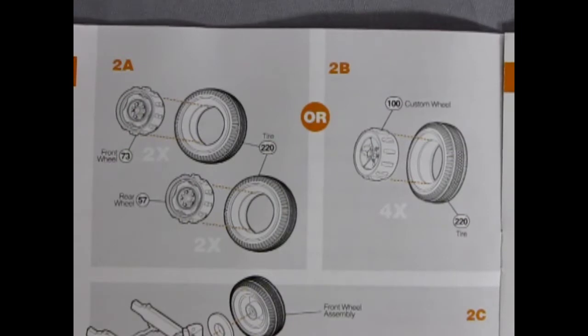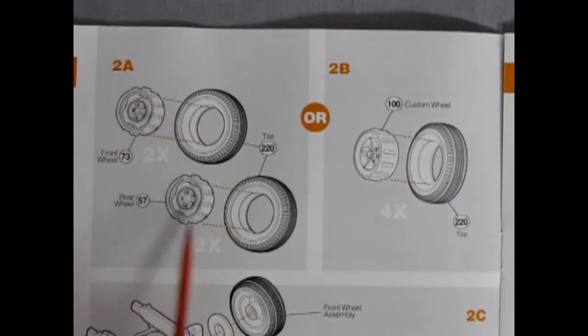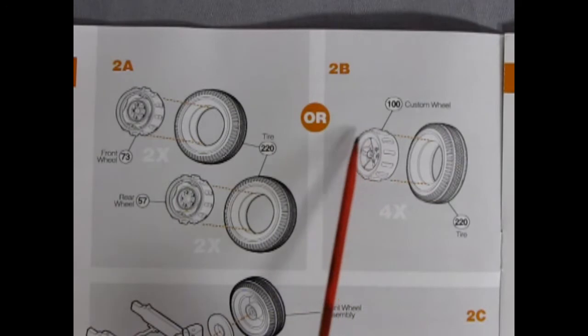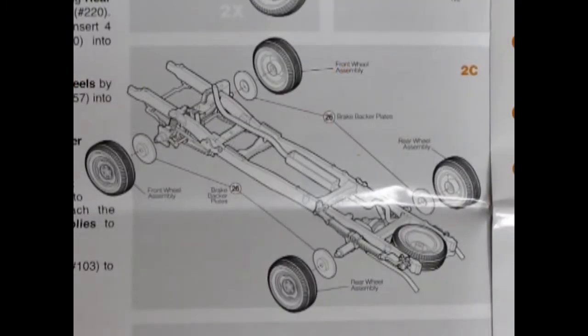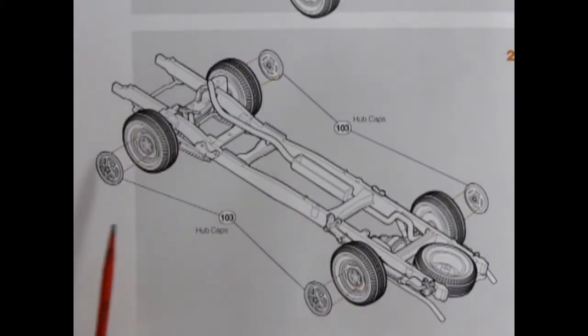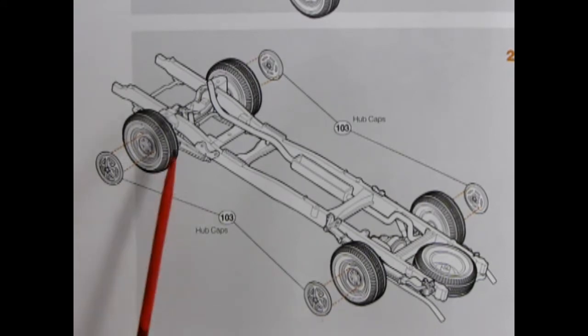In this model kit the builder has a choice between using the stock factory wheels or these five spoke Krager wheels. All of which pop onto these very nice tires. Our wheels and tires glue on via these brake backing plates which pop onto our axles. After we get our stock wheels on we have the choice of using these great 1970s style Ford hubcaps which simulate the Krager five spoke wheels.